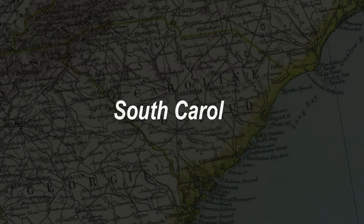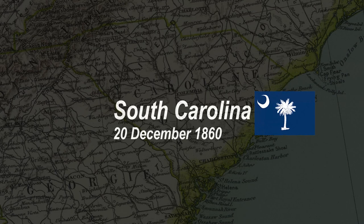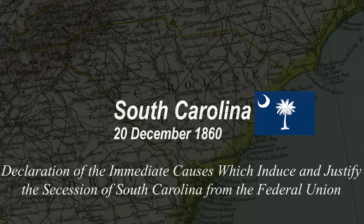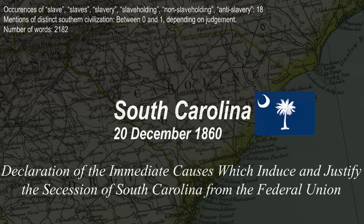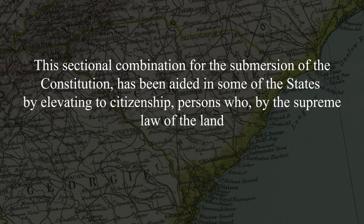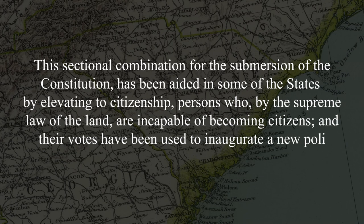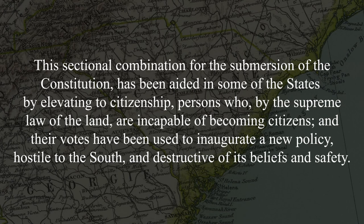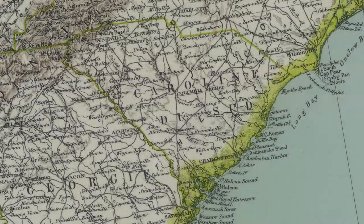The first state to secede was South Carolina on the 20th of December 1860. In its Declaration of Causes, it directly mentions slavery once every 121 words. How often does the declaration mention southern civilization or southern culture? Once overall. Maybe. In one of the later paragraphs, the declaration complains that people who shouldn't be able to vote voted for the Republicans, and thus were destructive of the south's belief and safety. That's a dog whistle, by the way, accusing the north of enfranchising African Americans to threaten slavery. Largely, Black people did not have the vote even in the northern states — it was the white voters in the north who enabled the Republicans to take the White House.